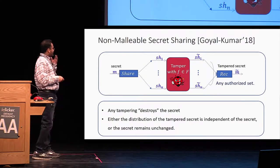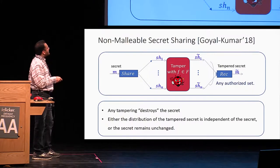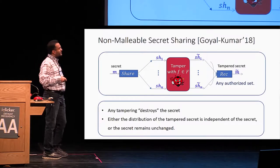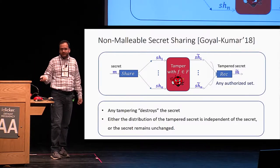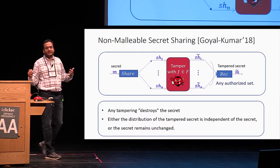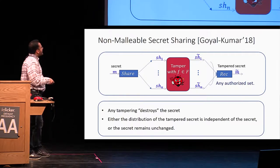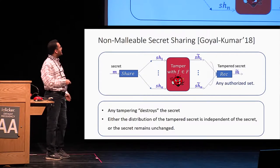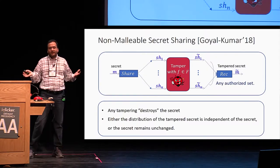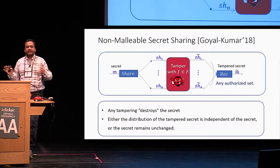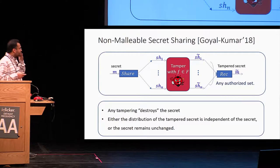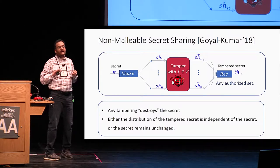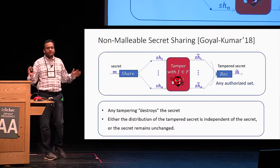In more detail: either the distribution of the tampered secret is independent of the secret we started with — meaning the original secret has been destroyed — or the secret remains unchanged, which refers to the case when the adversary did not tamper with anything at all. So with any tampering, the secret is gone and some unrelated string shows up.